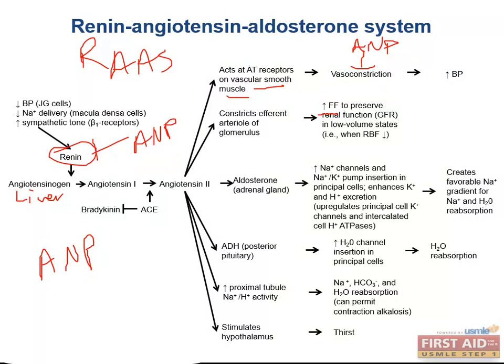Knowing the inhibitors for important pathways will be key for the exam, and RAS is a very important pathway, especially given the high prevalence of hypertension. Knowing the pathway as well as inhibitors like ANP will be important for your exam as well as your clinical practice.